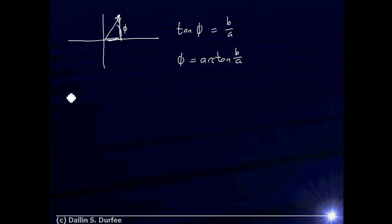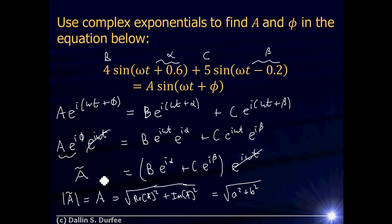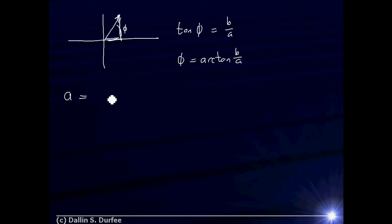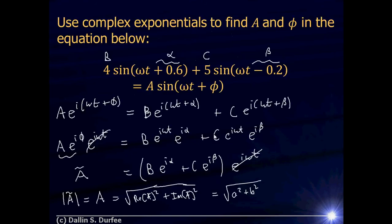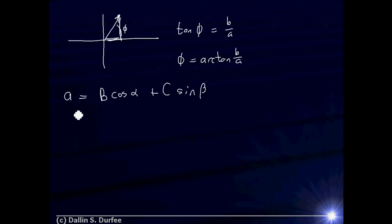The first thing we need is the real and imaginary parts of A-tilde. The real part of A-tilde is just the real part of B*e^(i*alpha) plus the real part of C*e^(i*beta). Using Euler's formula, that's B*cosine(alpha) plus C*cosine(beta). Plugging in the numbers, the real part of A-tilde turns out to be negative 6.529...